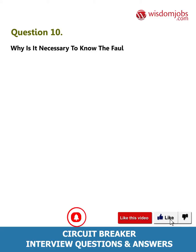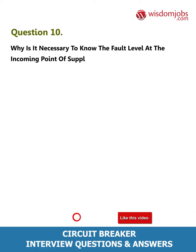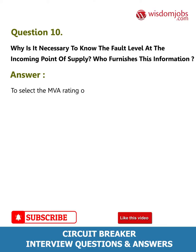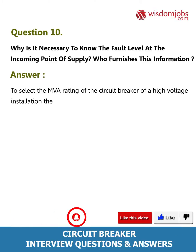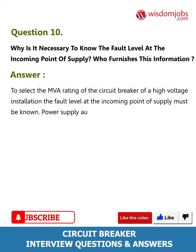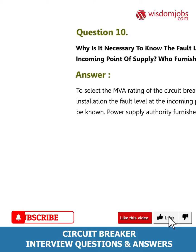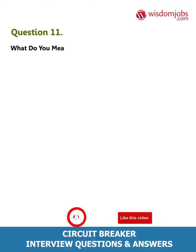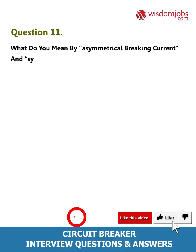Question 10: Why is it necessary to know the fault level at the incoming point of supply, and who furnishes this information? Answer: To select the MVA rating of the circuit breaker of a high voltage installation, the fault level at the incoming point of supply must be known. The power supply authority furnishes the fault level. Question 11: What do you mean by asymmetrical breaking current and symmetrical breaking current?